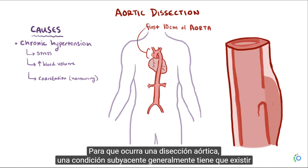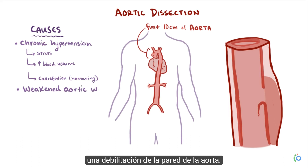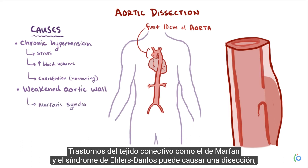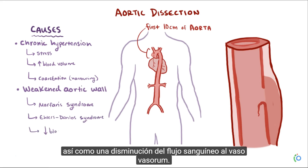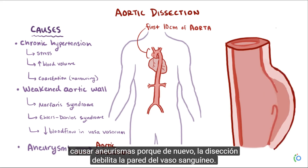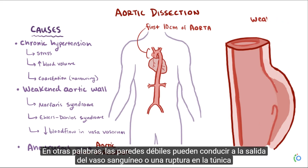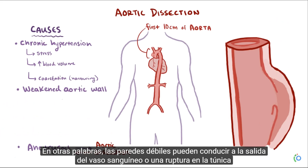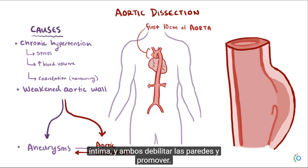In order for an aortic dissection to occur, an underlying condition usually has to exist that weakens the aorta's wall. Connective tissue disorders like Marfan's and Ehlers-Danlos syndrome can also cause a dissection, as well as decreased blood flow to the vasa vasorum. Aneurysms can be a cause of aortic dissection as well, and incidentally, dissection can also cause aneurysms, because the dissection weakens the blood vessel wall. Weak walls can lead to outpouching of the blood vessel or a break in the tunica intima, and both of these weaken the walls further.